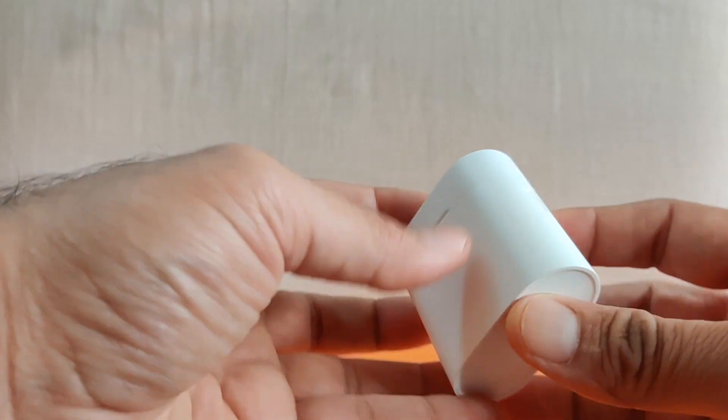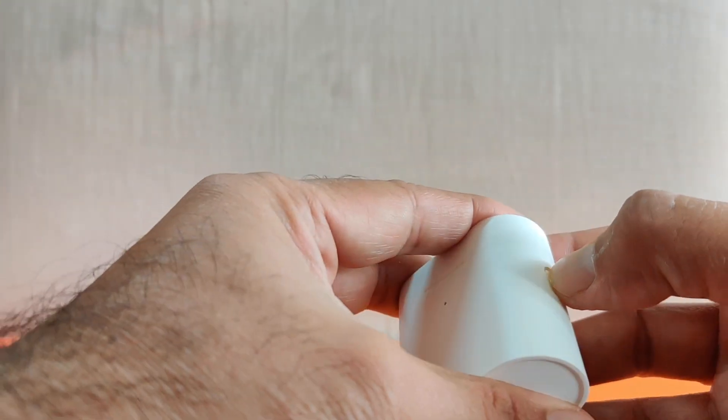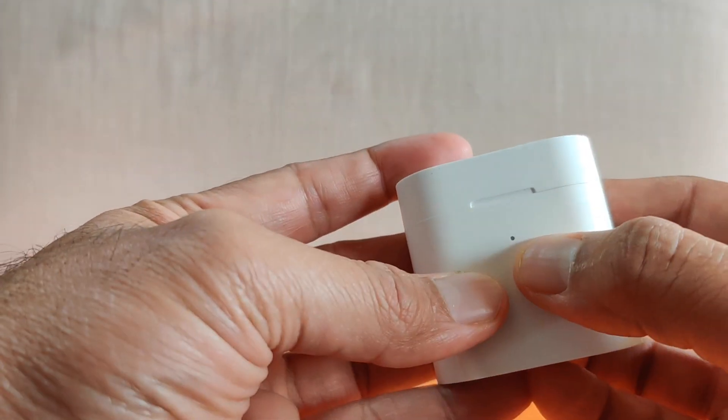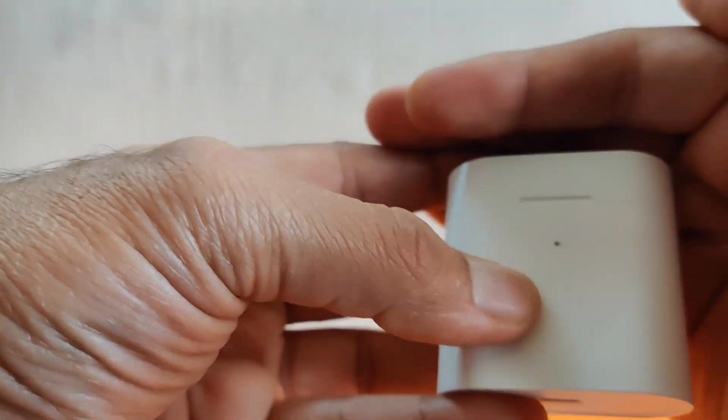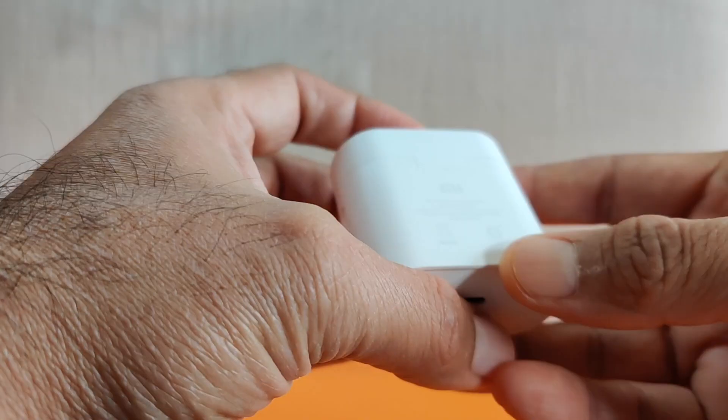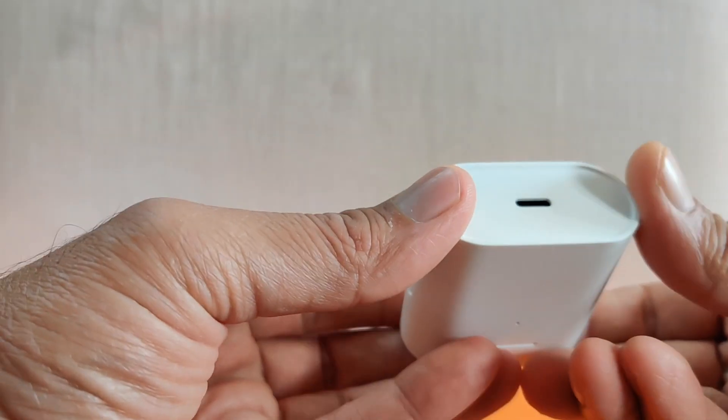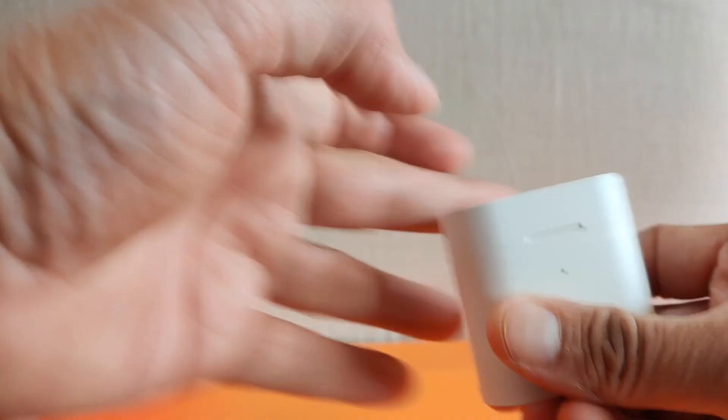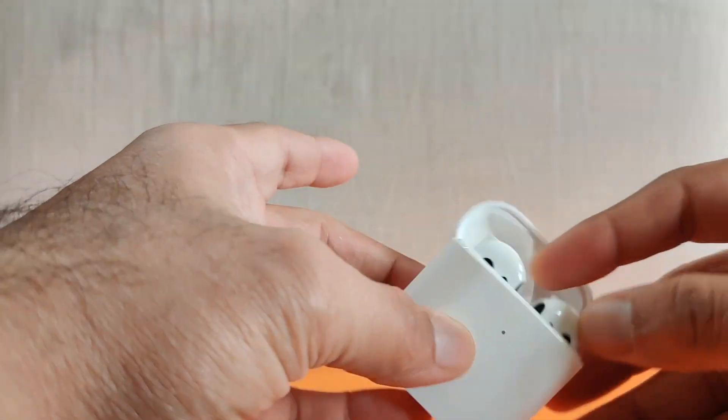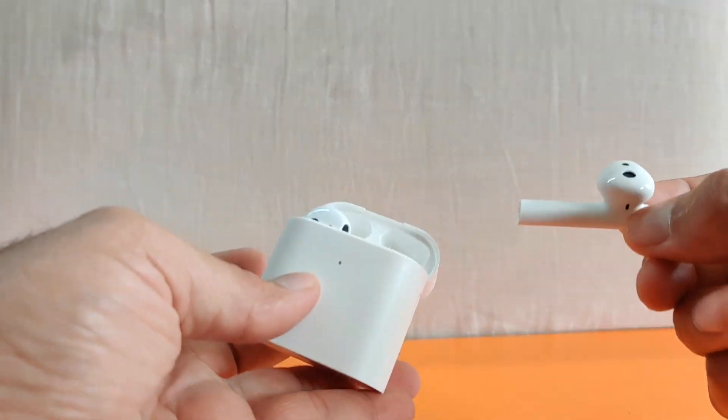And coming back quickly to this, it has a button on the right hand side over here and LED at the front. As you can see here and on the back some compliance information and on the bottom is the type C charging port. It opens up like this and it looks very Apple-ish to be very honest.